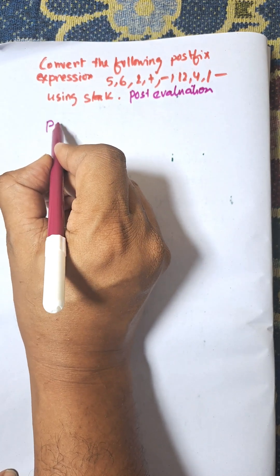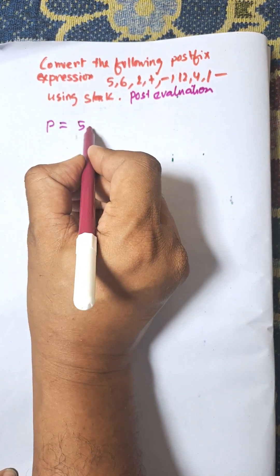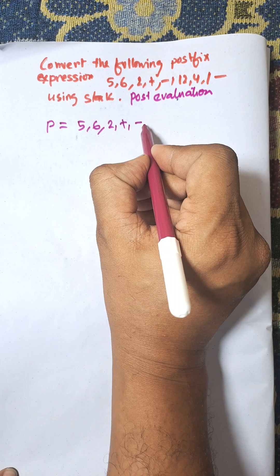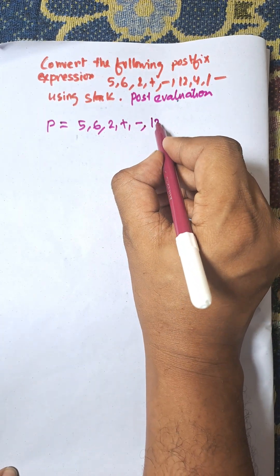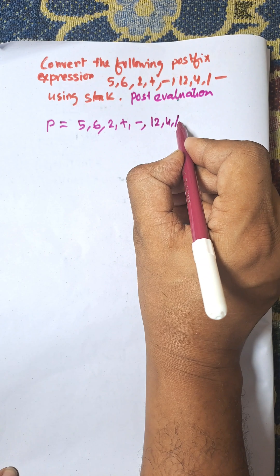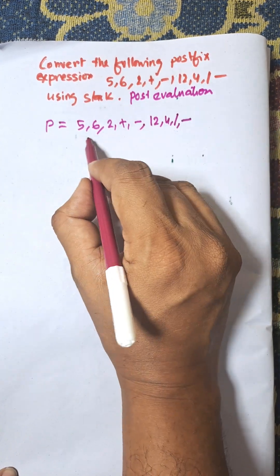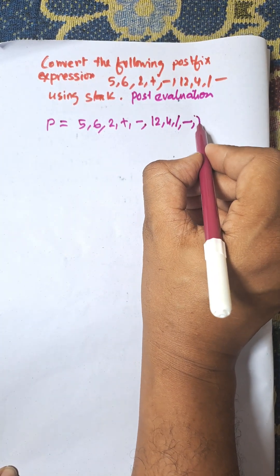Initially, P is equal to 5, 6, 2, plus, minus, plus, minus, 12, 4, division, and minus. We need to add a closing bracket at the end of the expression.